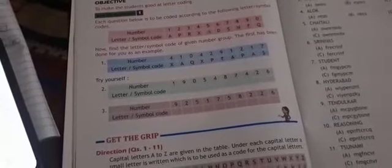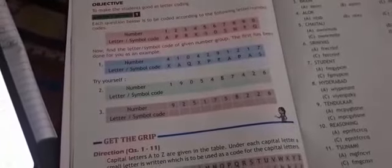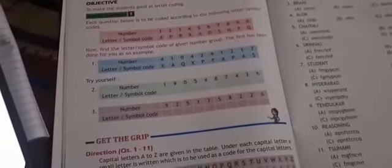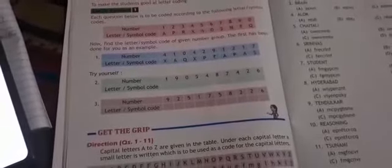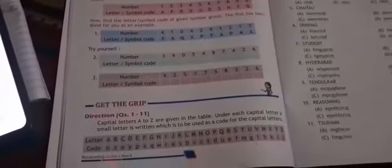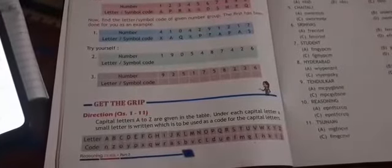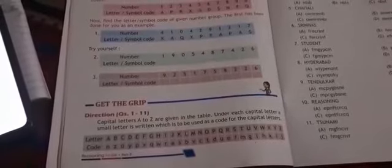The letter and symbol code used - how many letters? A, P, R, X, D, S, N, R. In this place, the code language is used. You can see the number sequence here: one, two, three, zero, five, eight, seven, four, two, six. And this is your letter or symbol code.